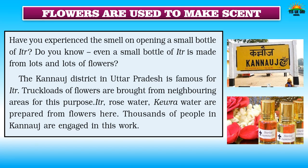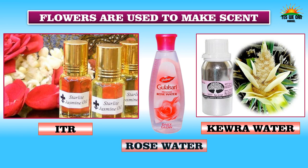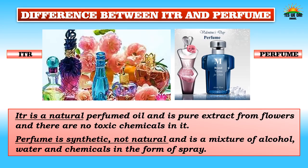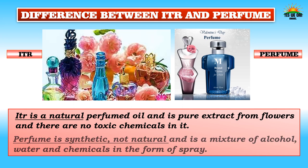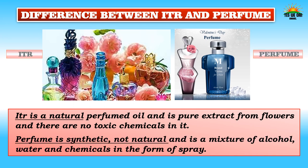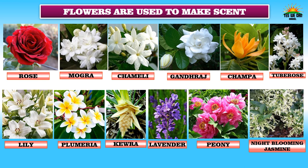Flowers are also used to make scent. Have you experienced the smell on opening a small bottle of itra? Even a small bottle of itra is made from lots and lots of flowers. The Kannauj district in Uttar Pradesh is famous for itra — truckloads of flowers are brought from neighboring areas. Itra, rose water, and keoda water are prepared from flowers, and thousands of people in Kannauj are engaged in this work. What is the difference between itra and perfume? Itra is a natural perfumed oil — a pure extract from flowers with no toxic chemicals. Perfume is synthetic, made of alcohol, water, and chemicals in spray form.